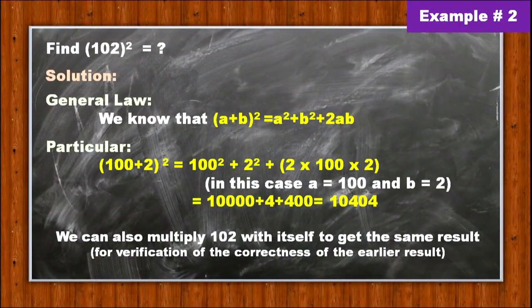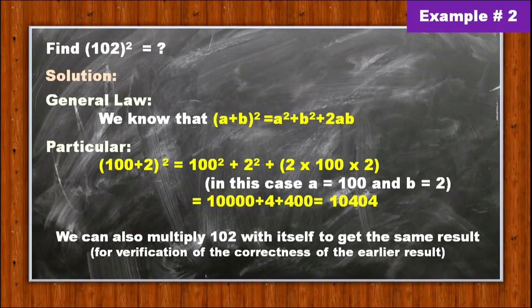For the second example, I want to find the value of 102². We already know the formula: (a + b)² = a² + b² + 2ab. Therefore, 102² = (100 + 2)² = 100² + 2² + 2 × 100 × 2, where a = 100 and b = 2. Finally, we get 10000 + 4 + 400 = 10404. We can also multiply 102 by itself to get the same result for verification. This is an example of the deductive method.